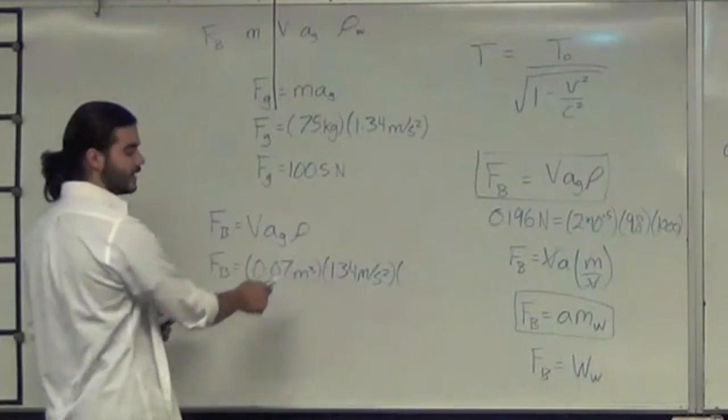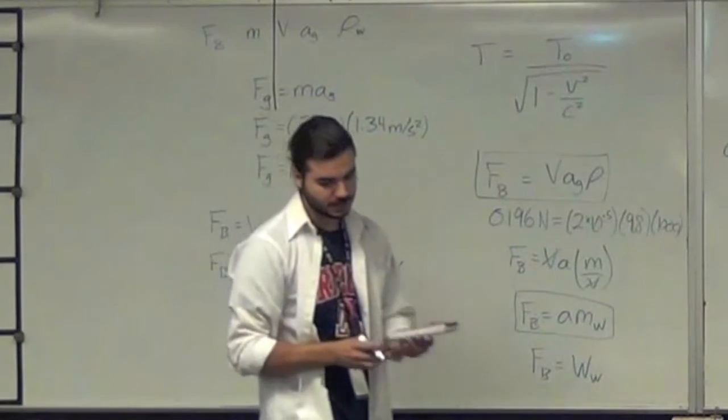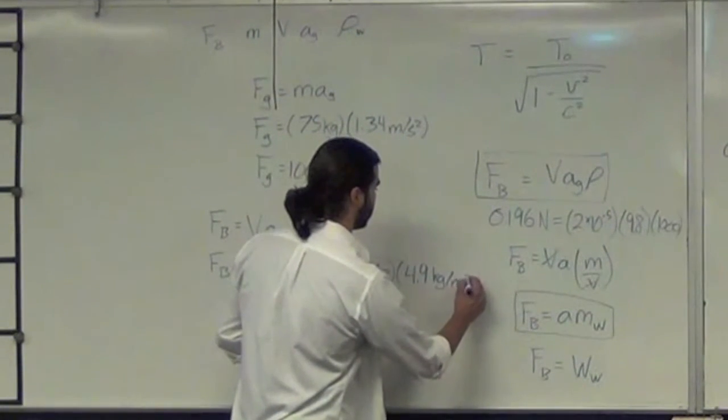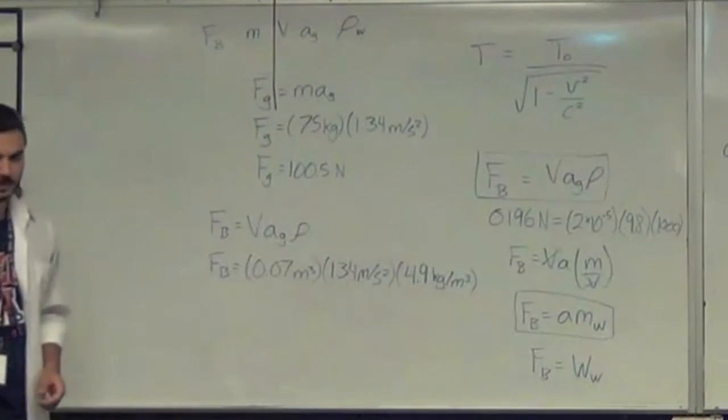And then, the density of the atmosphere on Titan is 4.9 kilograms per meter cubed. What is the buoyancy force?